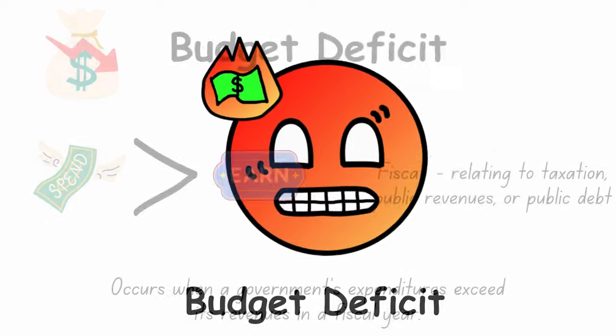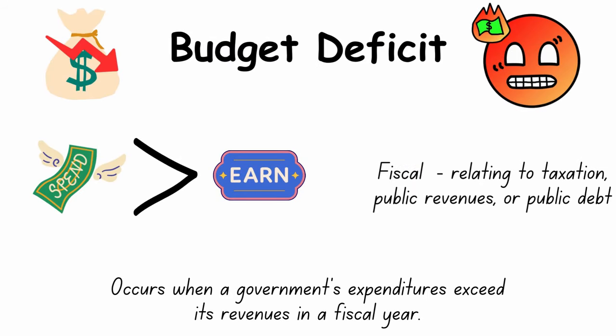Budget Deficit occurs when a government's expenditures exceed its revenue in a fiscal year. Fiscal relates to taxation, public revenues, or public debt. Basically, when a government's spending is greater than its earnings.